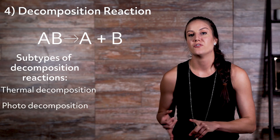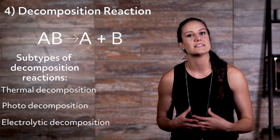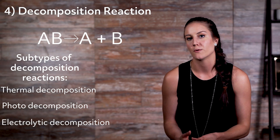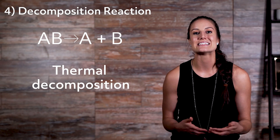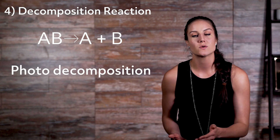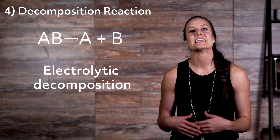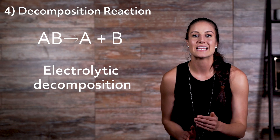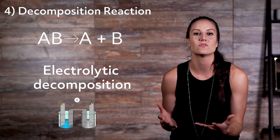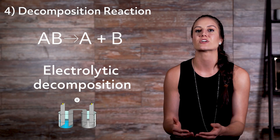The three subtypes are thermal decomposition, photodecomposition, and electrolytic decomposition. The term that precedes the word 'decomposition' refers to the type of energy used to make the decomposition possible. In thermal decomposition, heat is added to the complex compound to decompose it. In photodecomposition, photons or light is added to the complex compound to decompose it. In electrolytic decomposition, electric current passes through a liquid solution to decompose it — for example, the electrolysis of water, where water decomposes into hydrogen and oxygen when an electric current is added.